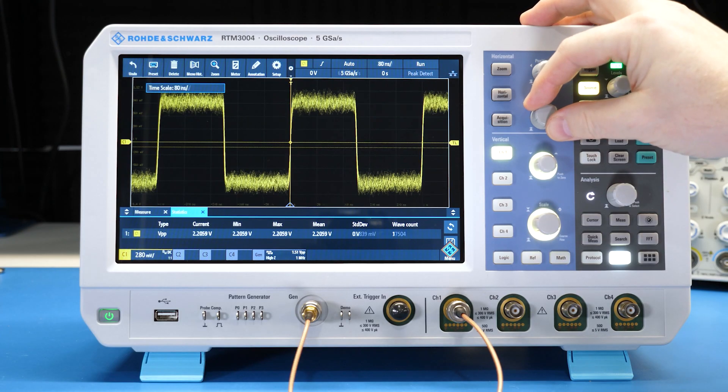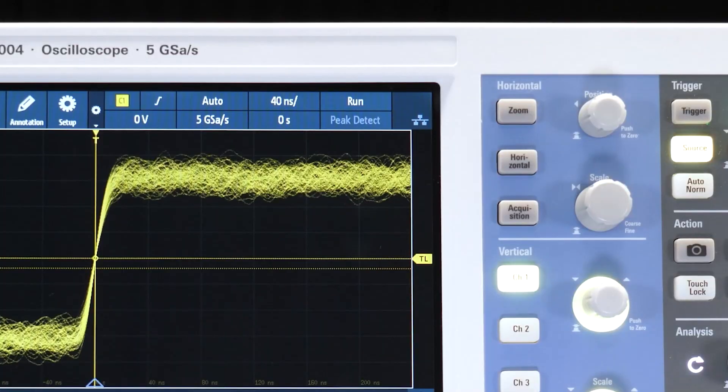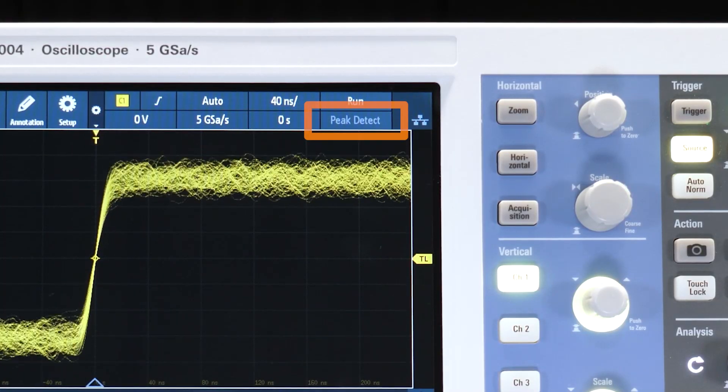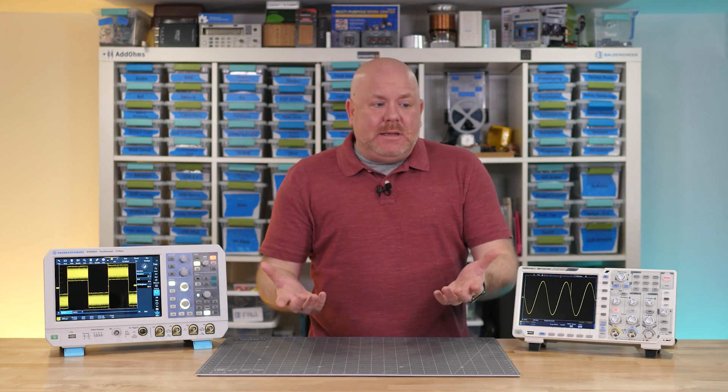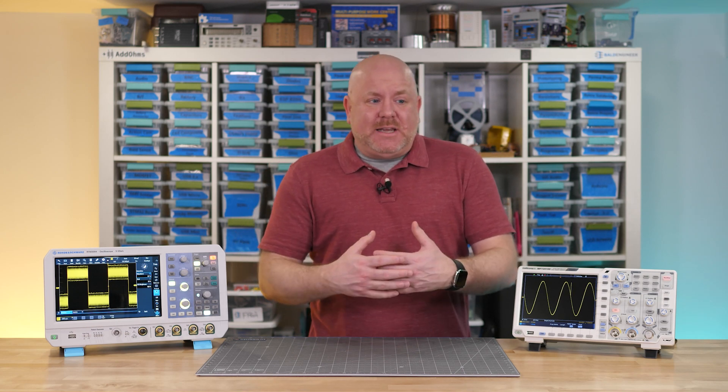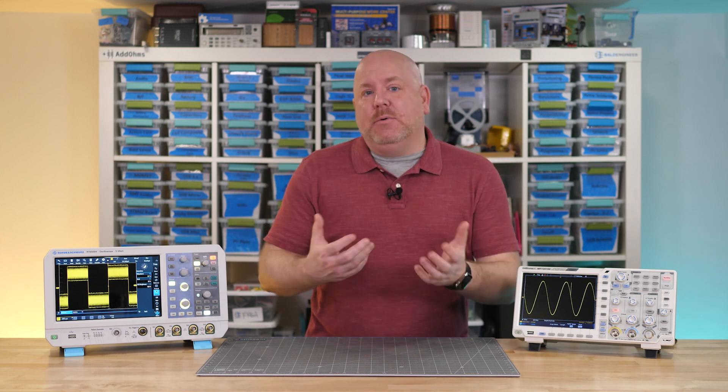Alternatively, if we zoom in enough, eventually peak detect gets disabled. At that fast sweep rate, the scope is already sampling at its max sample rate, so there's no value in doing peak detection anymore because we're seeing all of the dots that we captured anyway.